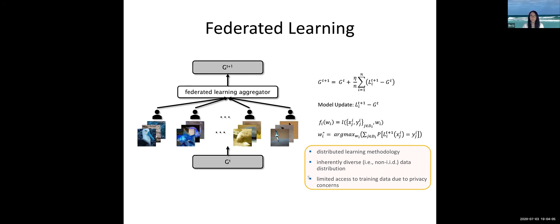This raises concern: with so many participants in the training process, what if some of them are adversarial? Is it possible for adversaries to use a small amount of unnoticeable poisoning attacks to poison the whole training process and ultimately lead to severe consequences?